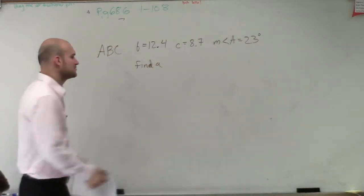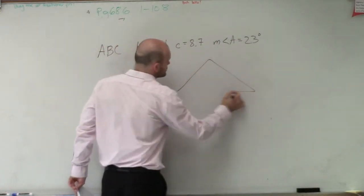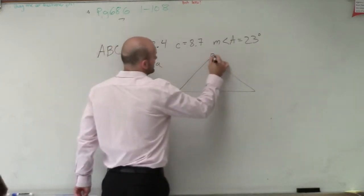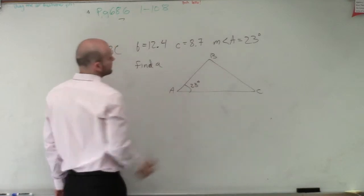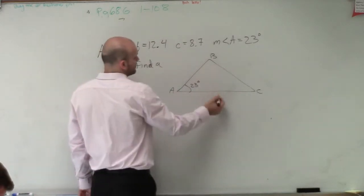Let's go ahead and draw what this triangle is going to look like. It doesn't really matter how you draw the triangle. Let's just do A, B, and C. So we know angle A is 23 degrees, and b equals 12.4.